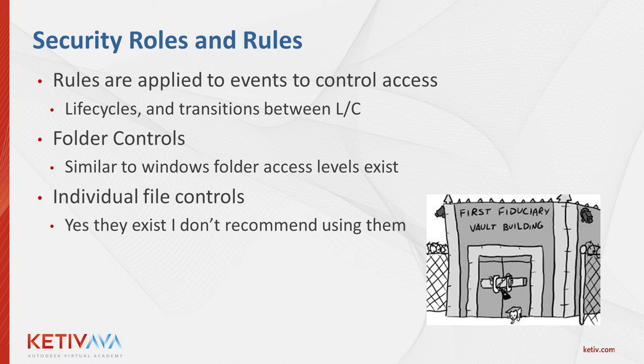We can also do folder controls — we can actually put lifecycles on folders and use lifecycle securities there, or just go to a folder and apply security to it just like you would in a Windows environment. And, believe it or not, I can even get granular down to a single file level. While I don't recommend this, because of the backtracking required to figure out what happened, you can actually go to a file and override any security that exists on it to say Mike, an administrator, or Nigel has access to this file regardless of what conditions it may be in.